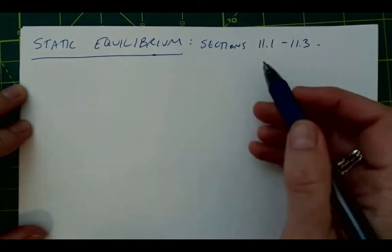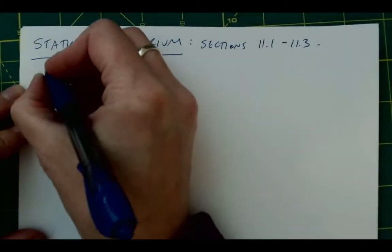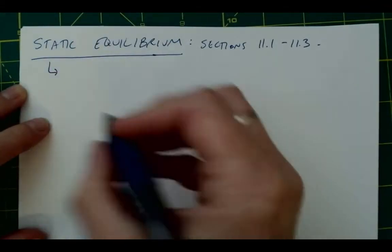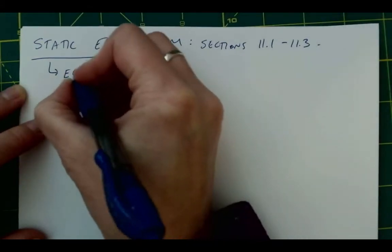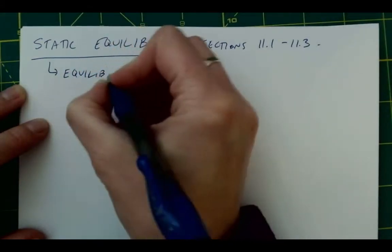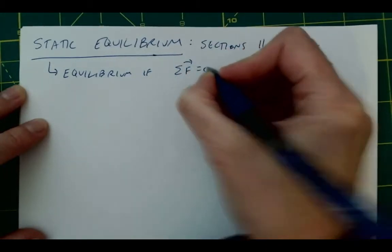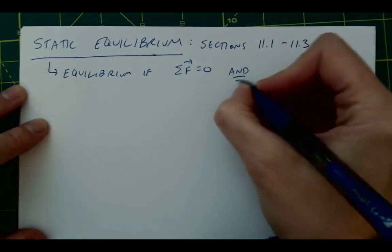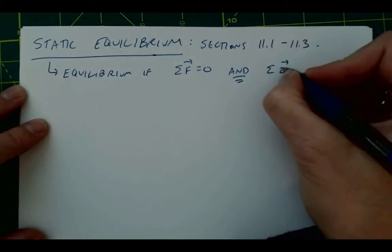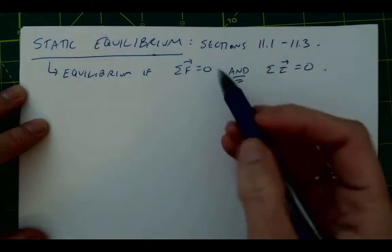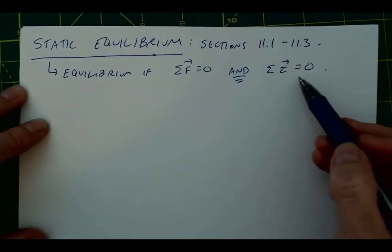The same is true here now, we're just adding in what we know about rotation, and so you have equilibrium if the sum of forces is equal to zero, and the sum of torques is equal to zero. Because if you just have the sum of forces equal to zero, but there is a net torque,